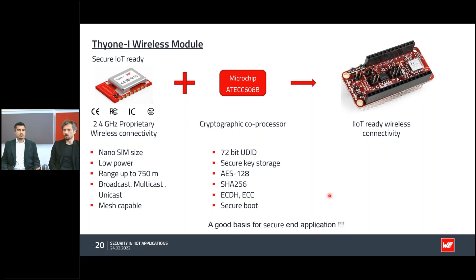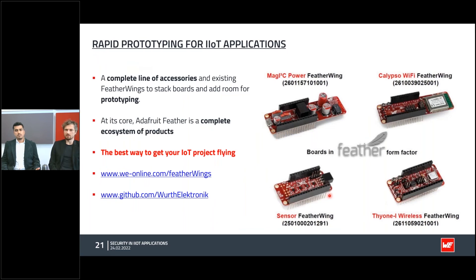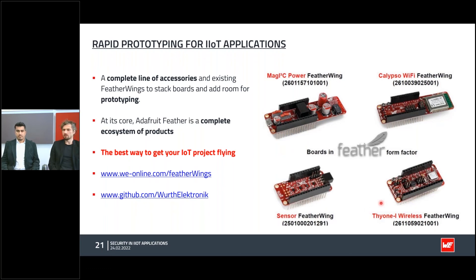On our last slide, we show our full line of Featherwings: the Thione Wireless Featherwing, the Calypso Wi-Fi Featherwing, a Sensor Featherwing with four sensors so customers can start right away, and the Magic Power Featherwing providing all necessary inputs stacked together. Featherwings are a great way to get your IoT application started quickly and economically — the best way to get your IoT project flying.